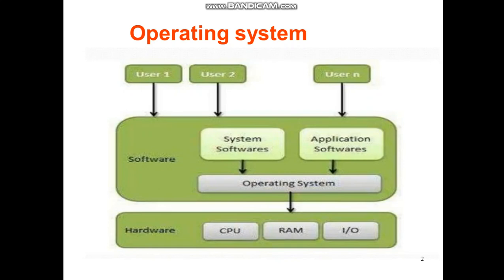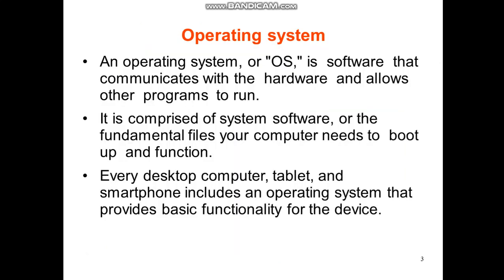Let us begin. First, observe this particular diagram. As you can see, a computer system basically consists of hardware and software, and the user typically uses the software to do various applications. So where does the operating system come in between? The operating system is an interface which facilitates users to use different application softwares. It is a software that communicates with the hardware and allows other programs such as application programs to run on top of it. Literally every desktop computer, tablet, and smartphone includes an operating system, without which the device cannot be utilized.